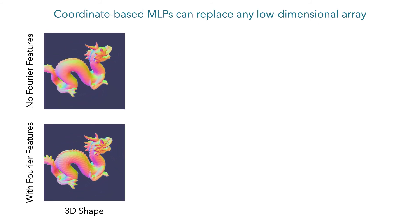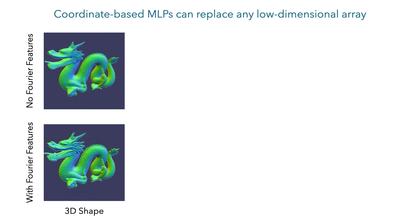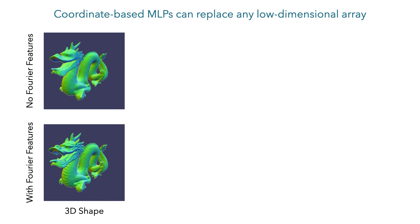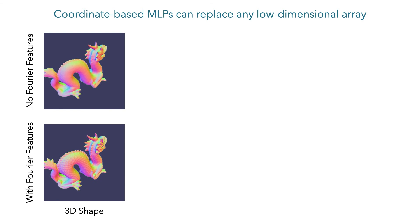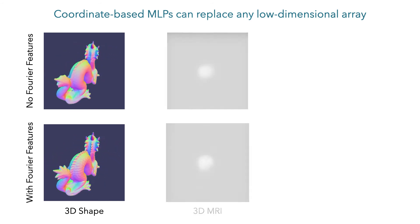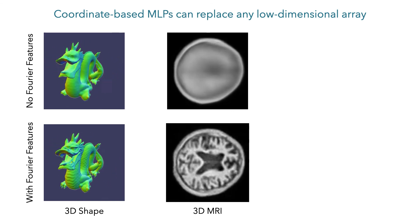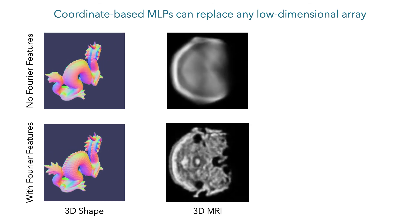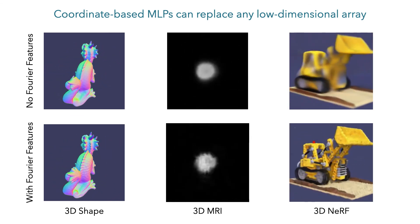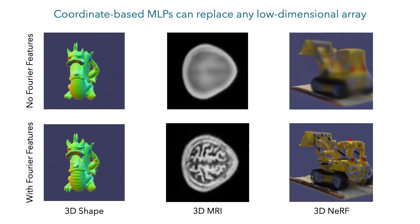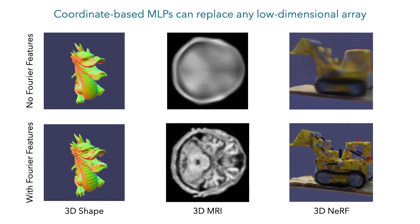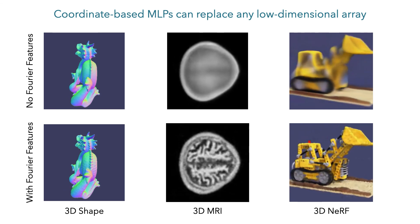This technique is applicable for training coordinate-based MLPs as an alternative to low-dimensional arrays for representing a variety of low-dimensional visual signals. In all cases, using our Fourier feature mapping significantly increases the details represented by the MLP. In the first example, we train an MLP to regress the continuous 3D occupancy function of a dragon mesh, and Fourier features enable the network to represent fine details like the dragon scales. In the second example, we train an MLP to represent the 3D volume density inside a human brain, indirectly supervised in the Fourier domain with MRI measurements. In the final example, we train an MLP to represent a neural radiance field consisting of volume density and view-dependent color from observed images, using the loss of rendering the observed images as an indirect form of supervision. In all of these tasks, Fourier features allow the network to represent much higher frequency details than a naive approach.